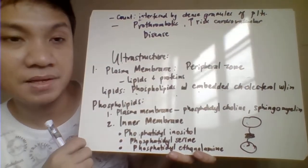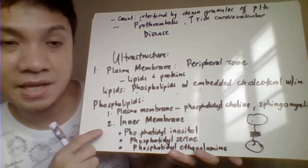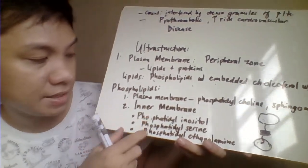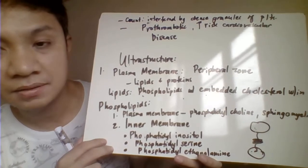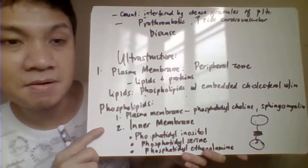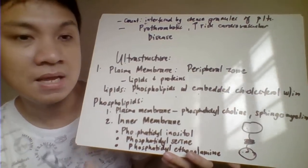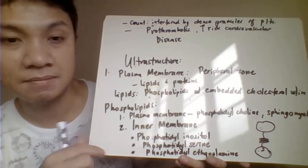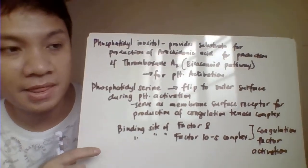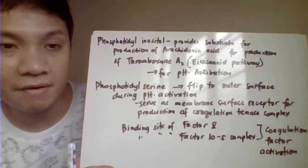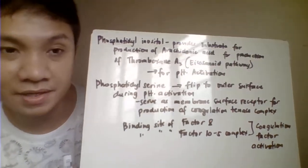The lipid component of the platelet cell membrane is divided into the outer plasma membrane layer and the inner membrane layer. The outer plasma membrane layer is made up of phosphatidylcholine and sphingomyelin. The inner membrane is made up of three phospholipids: phosphatidyl inositol, phosphatidyl serine, and phosphatidyl ethanolamine.